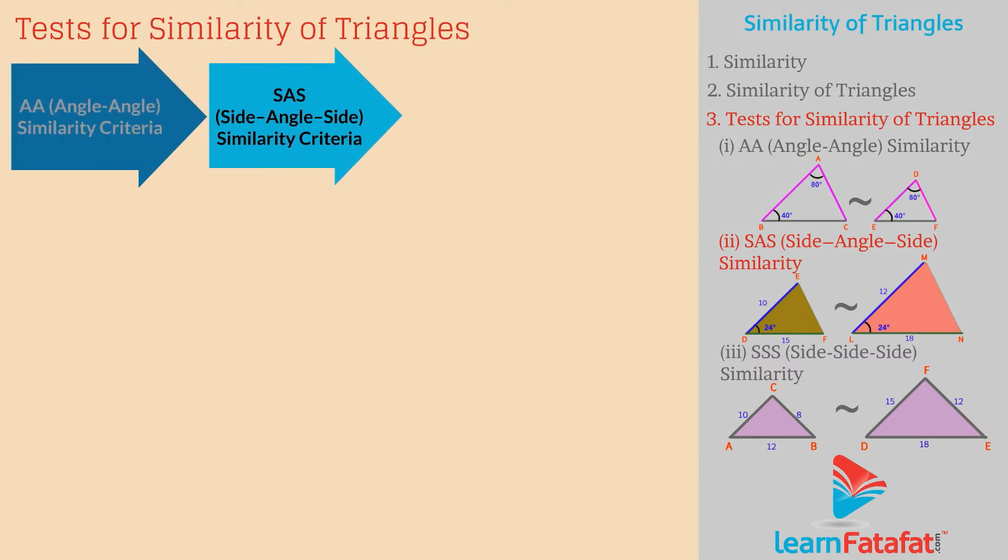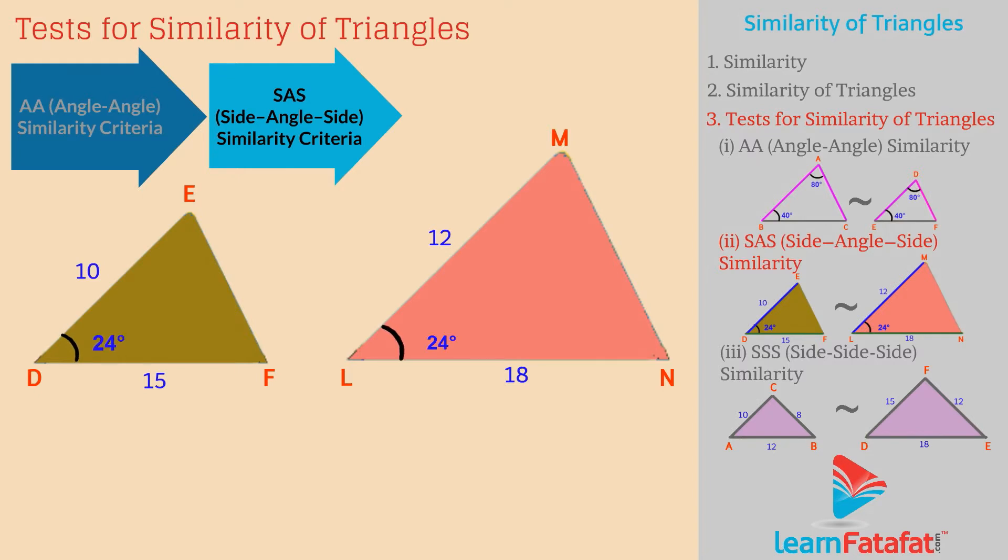SAS side-angle-side similarity Criteria. If the two sides of one triangle are in proportion with corresponding sides of another triangle, and if the angles included by the two sides in each triangle are equal, then the two triangles are similar.